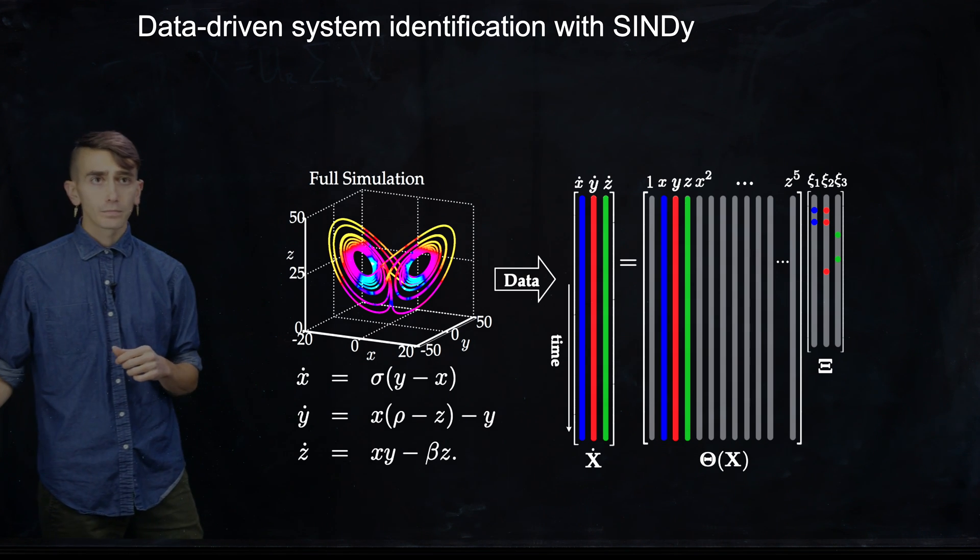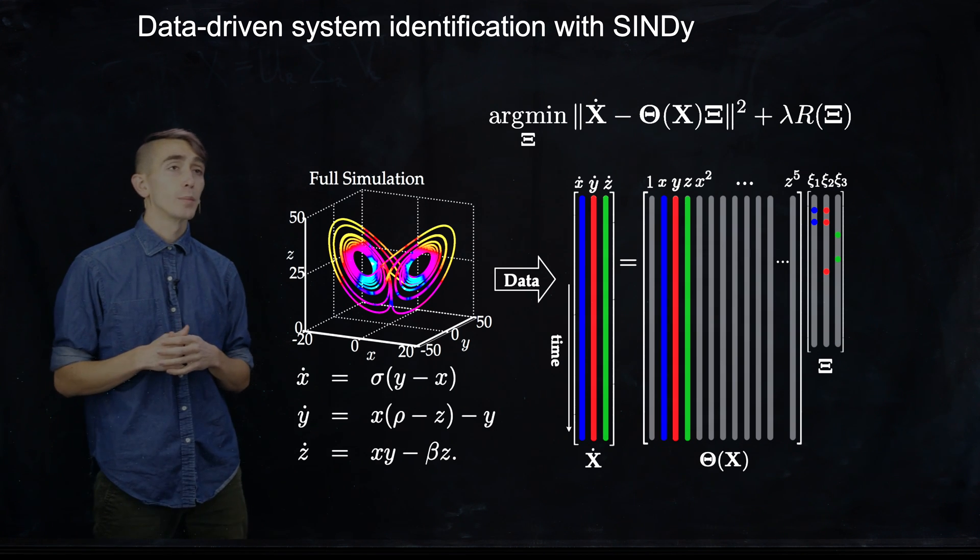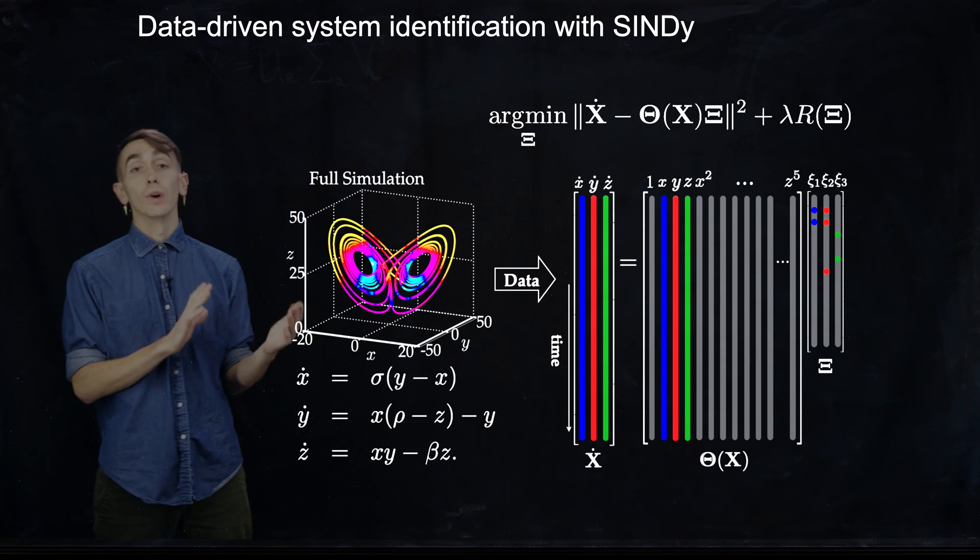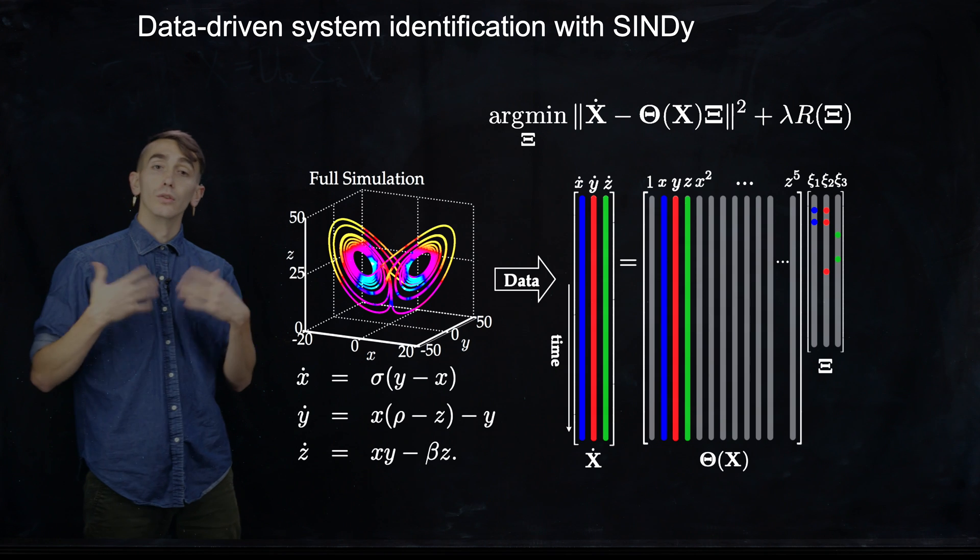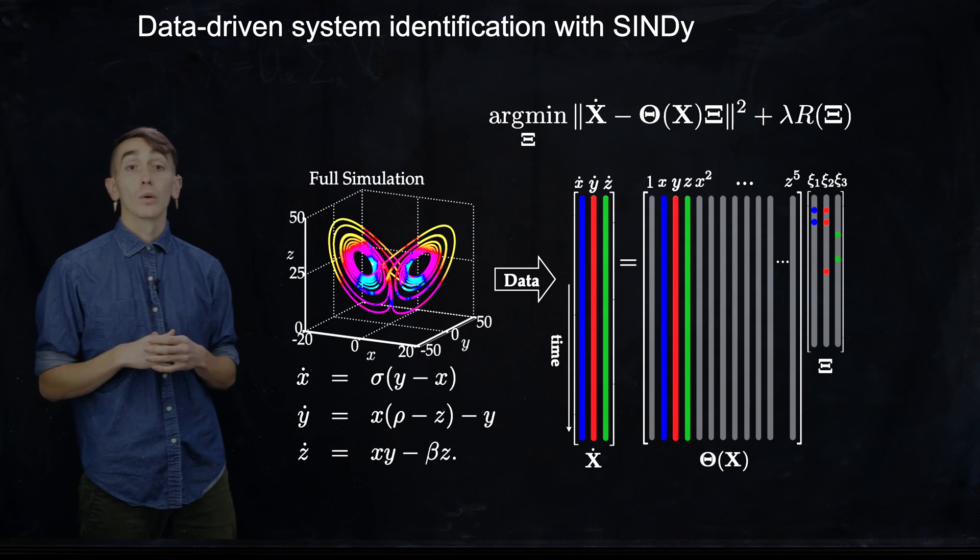And what that looks like is you solve this optimization problem I've just put up, where you're asking to minimize the difference between the left hand side and right hand side of the equations. So you're trying to fit the data. But at the same time, you add what's called a sparsity prior, that lambda R of C.